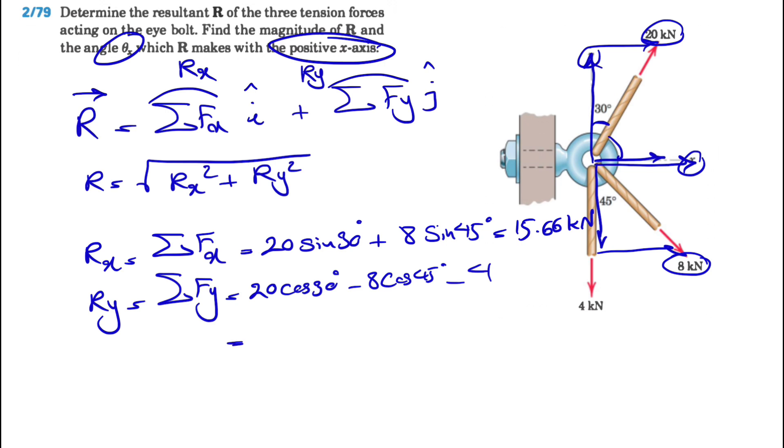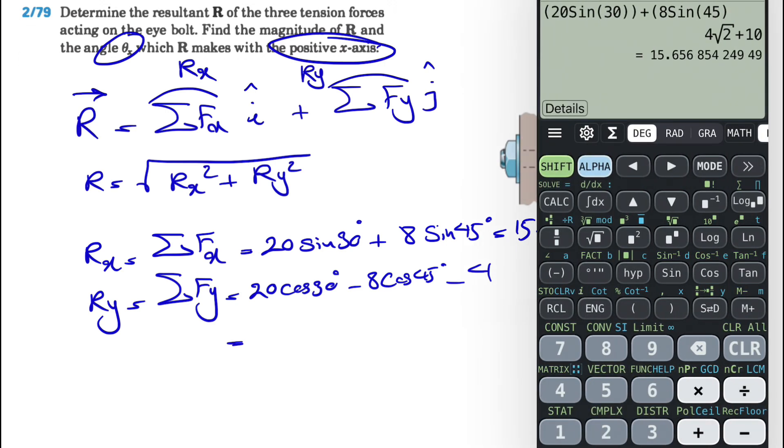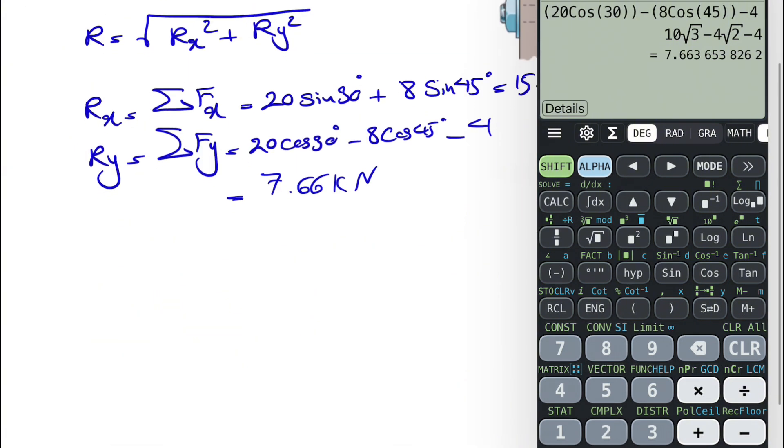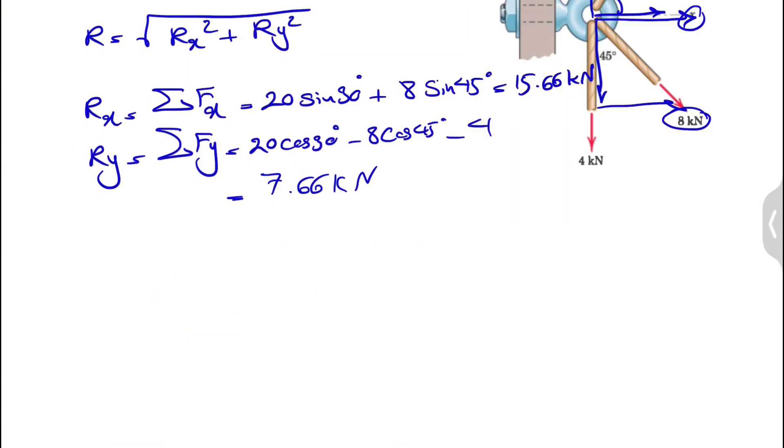If we calculate this, we have 20 cosine of 30 degrees minus 8 cosine of 45 minus 4. This is going to be 7.66 kilonewton.